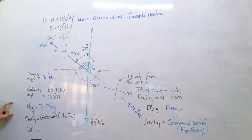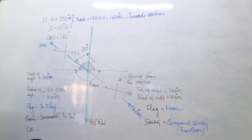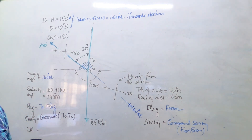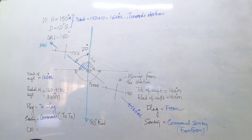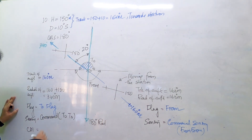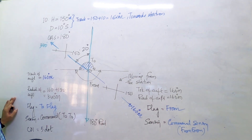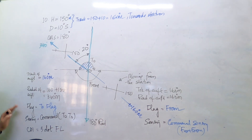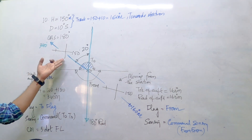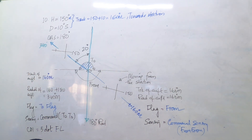So what does the CDI indicate? Since 20 degrees exceeds full-scale deflection at 10 degrees per dot, it will be a full-scale five-dot deflection to the left - a fly left indication. It's command sensing and you also have to fly left.